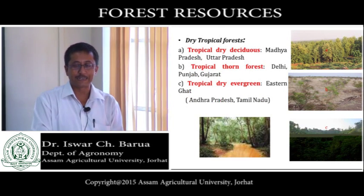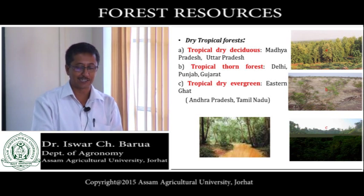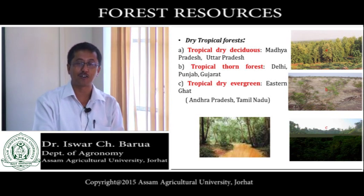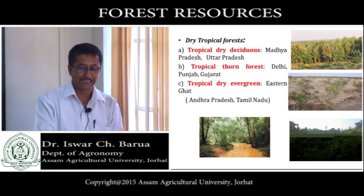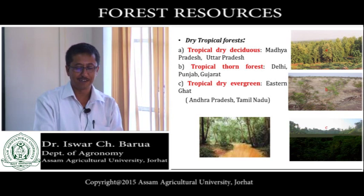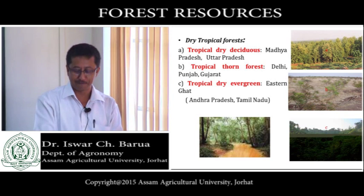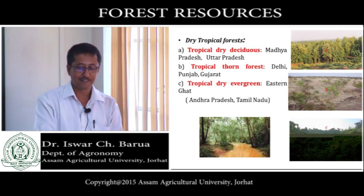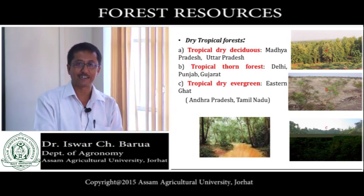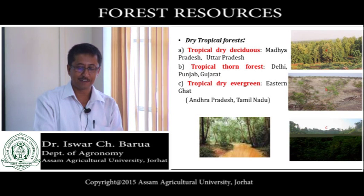Tropical dry deciduous — we can now understand what tropical dry deciduous means. Tropical thorn forest is found in Delhi, Punjab, and Gujarat. Tropical dry evergreen forest is found on the Eastern Ghats.